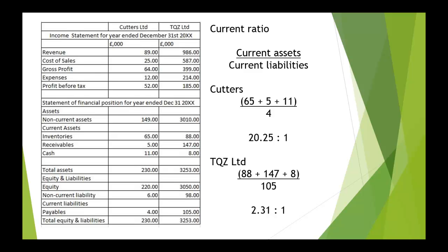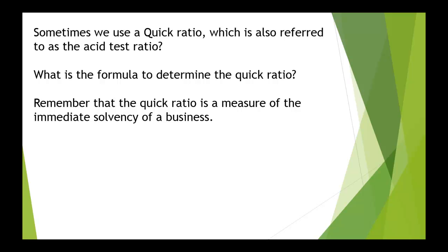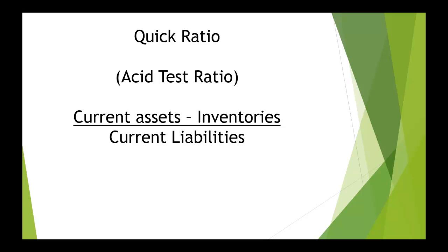There's a vast difference in the current ratios for those two companies. And sometimes we use what we call a quick ratio, also known as the acid test ratio, which is a very easy way to measure the immediate solvency of a business. So we take current assets, subtract the inventories, and divide by the current liabilities.